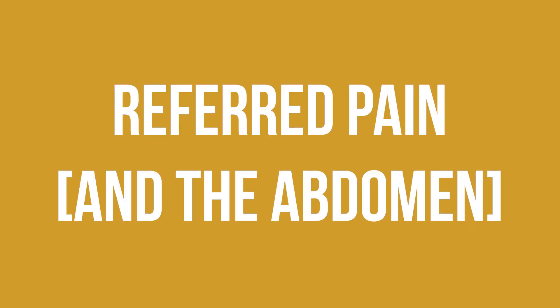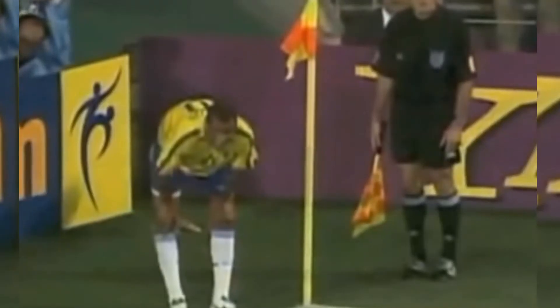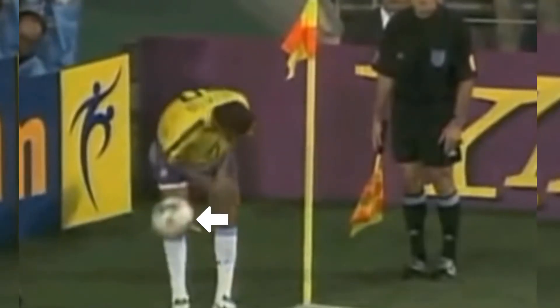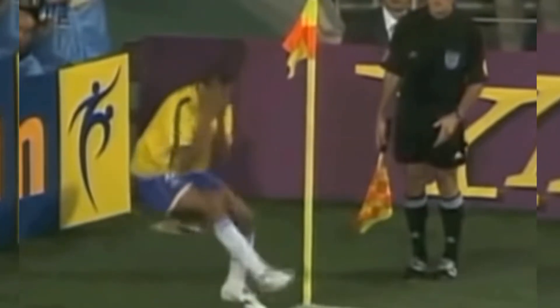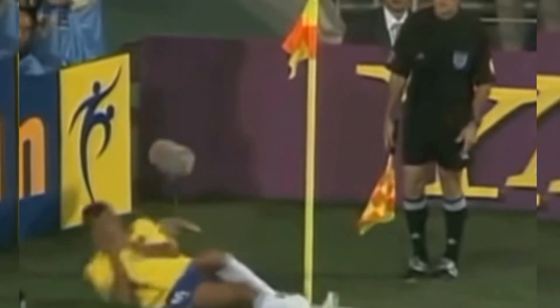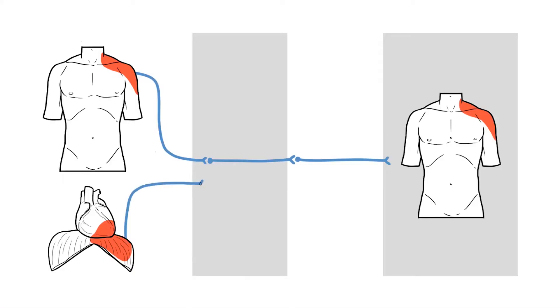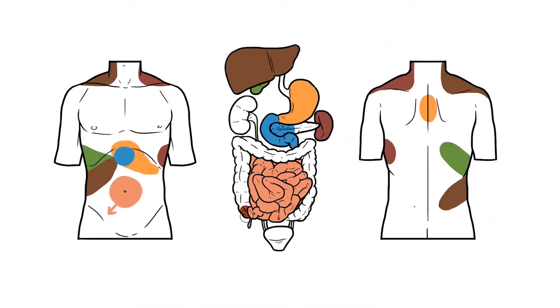This video is about referred pain, the phenomenon where an injury occurs in one location but the pain is experienced somewhere else. Over the next 8 minutes, we'll run through some of the major principles of referred pain before applying them to the abdomen.